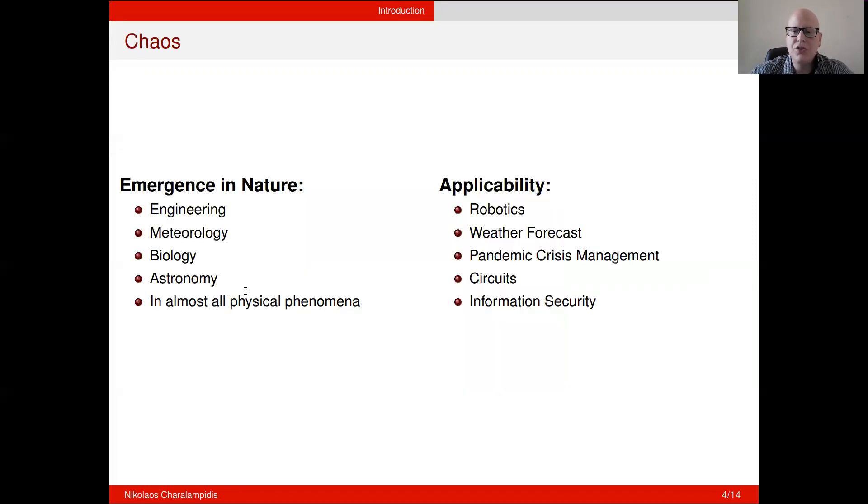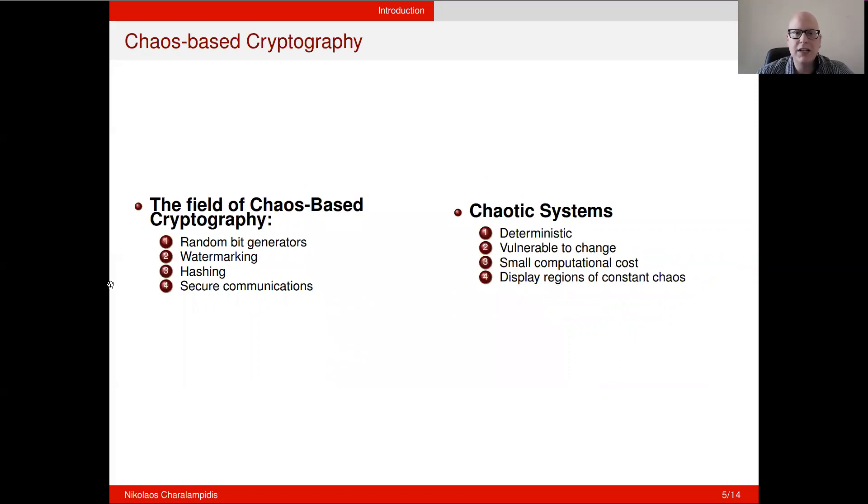There are two major areas for chaotic systems. The first is chaos emergence in nature, engineering, meteorology, biology, astronomy, and basically we meet chaos in almost all physical phenomena. The second is chaos application. We've seen chaos being utilized in robotics, weather forecast, pandemic crisis management, circuits, information security. In particular, in the discipline of information security, there are many advancements in the field of chaos-based cryptography with ubiquitous applicability. For example, in random bit generators, watermarking, hashing, secure communications.